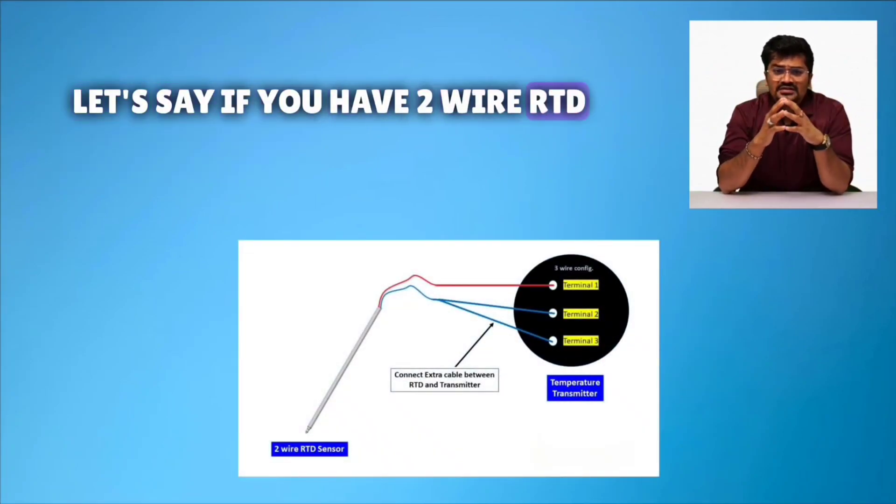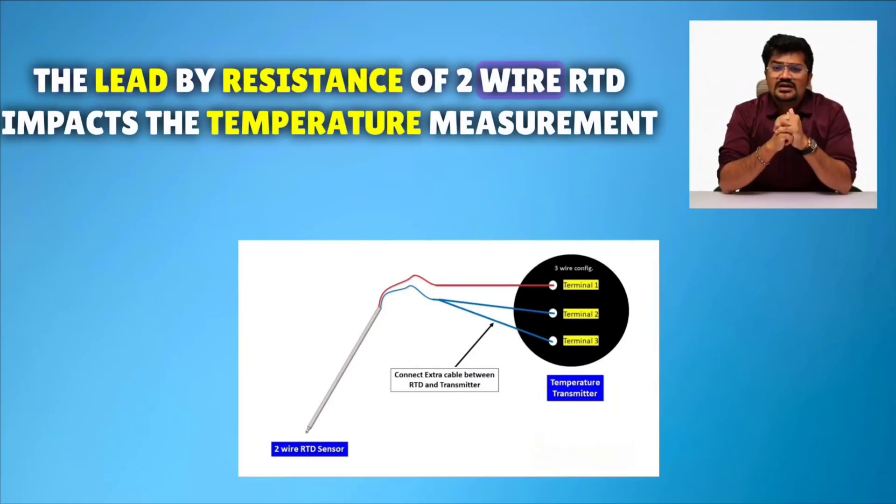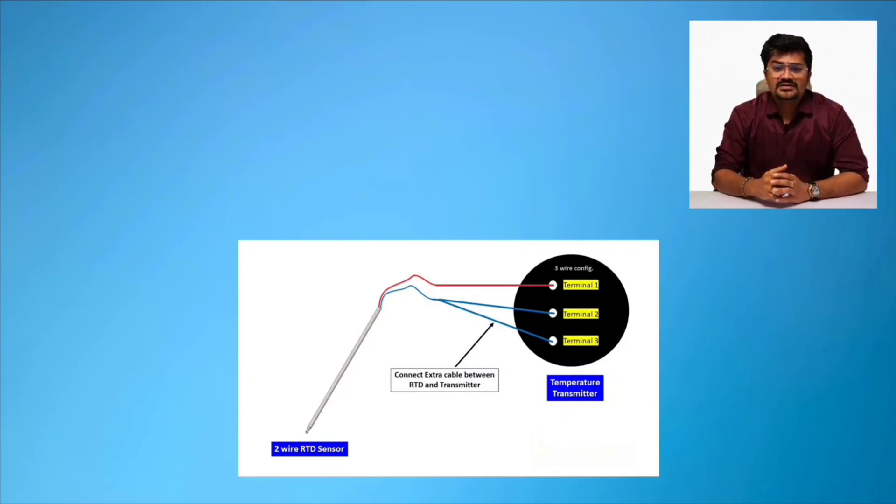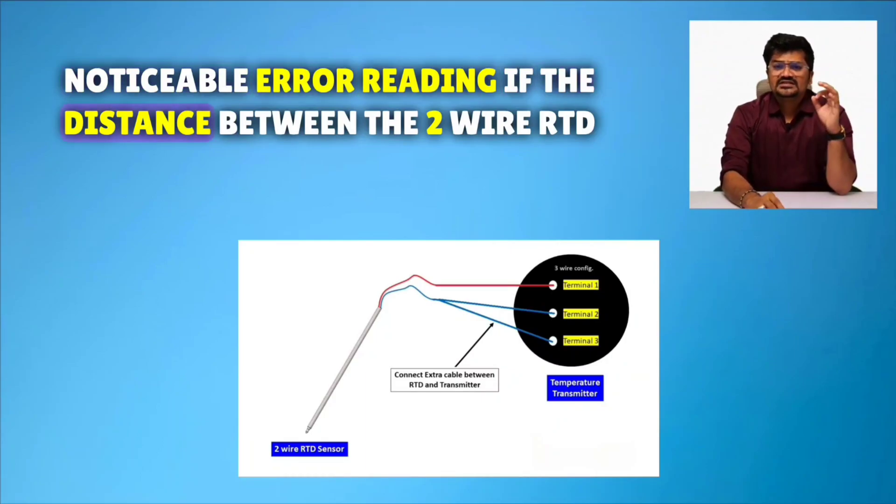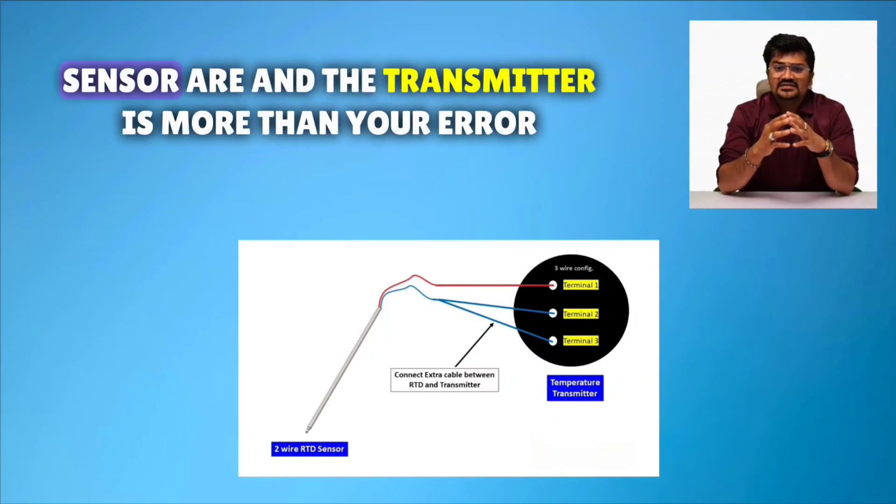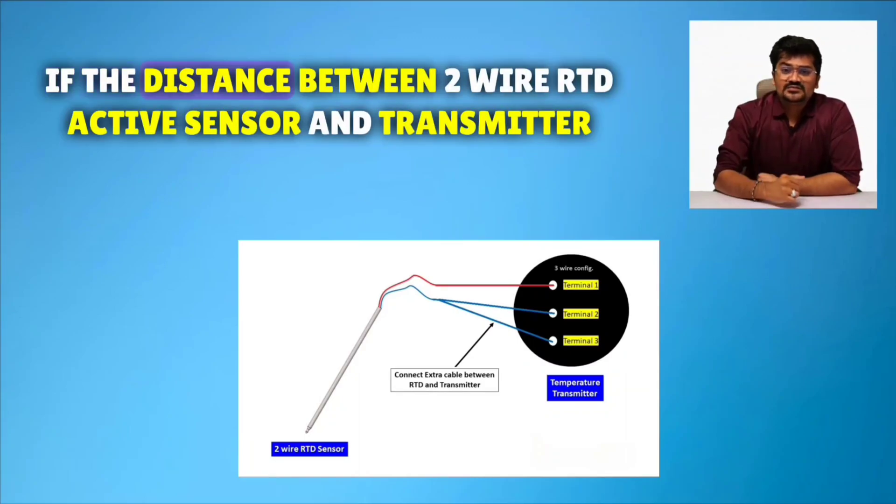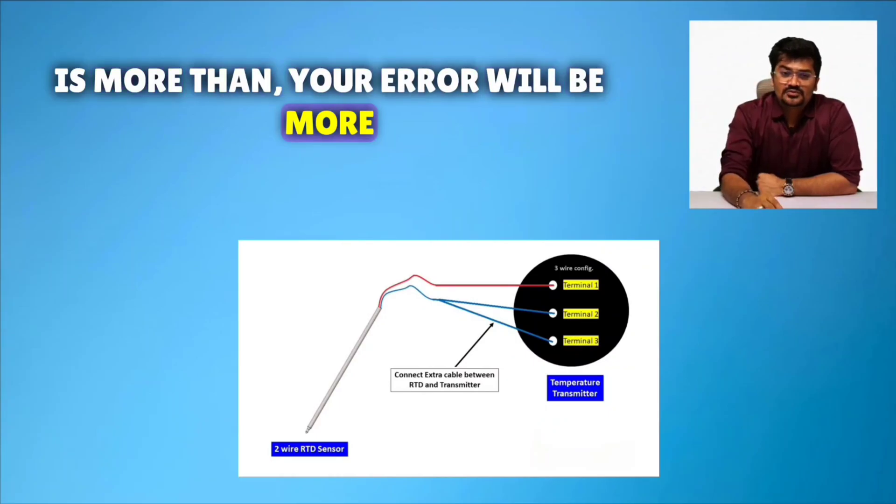Let's say if you have 2-wire RTD, the lead wire resistance of 2-wire RTD impacts the temperature measurement and creates noticeable error reading. If the distance between 2-wire RTD sensor and transmitter is more, your error will be more.